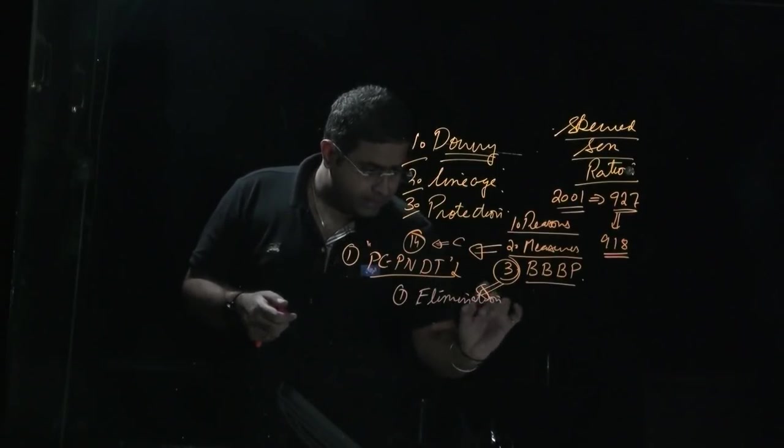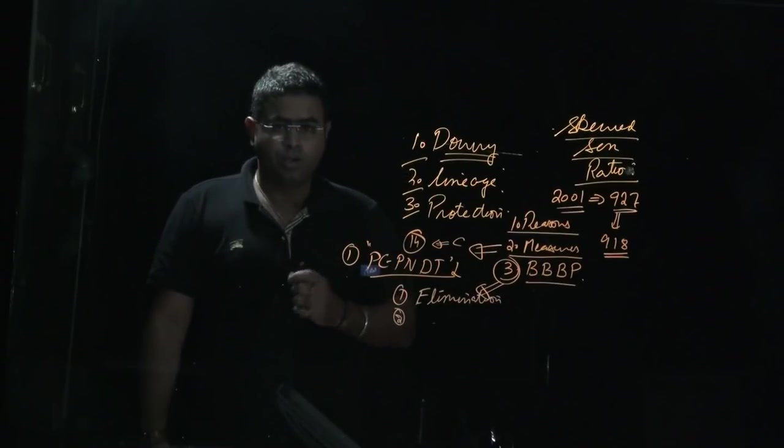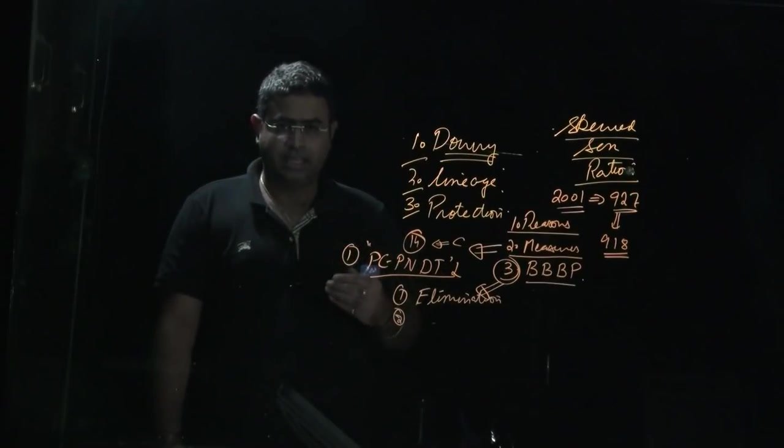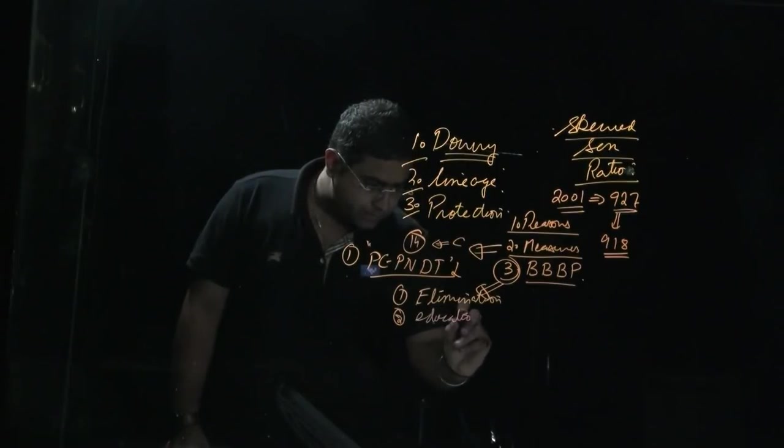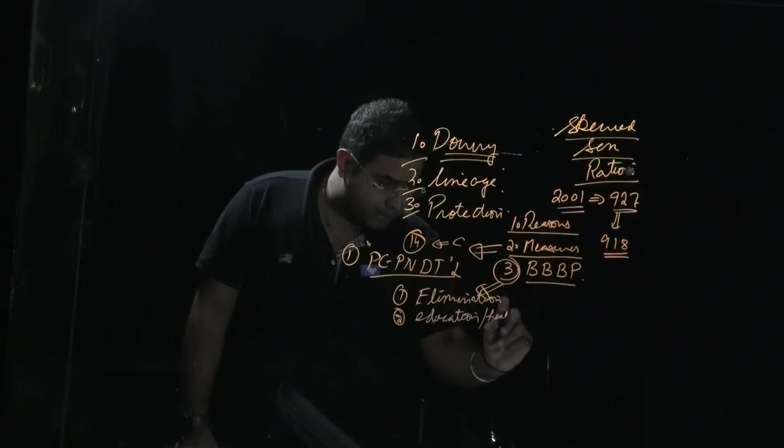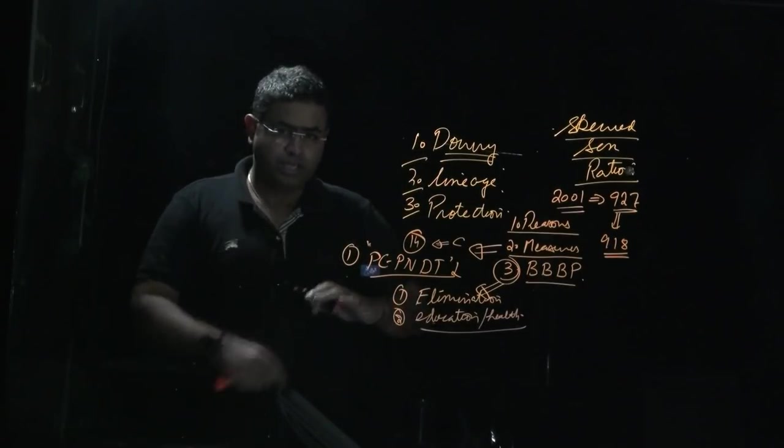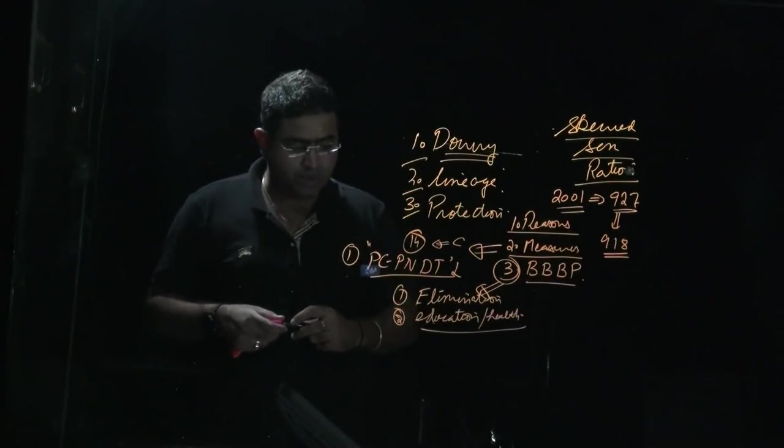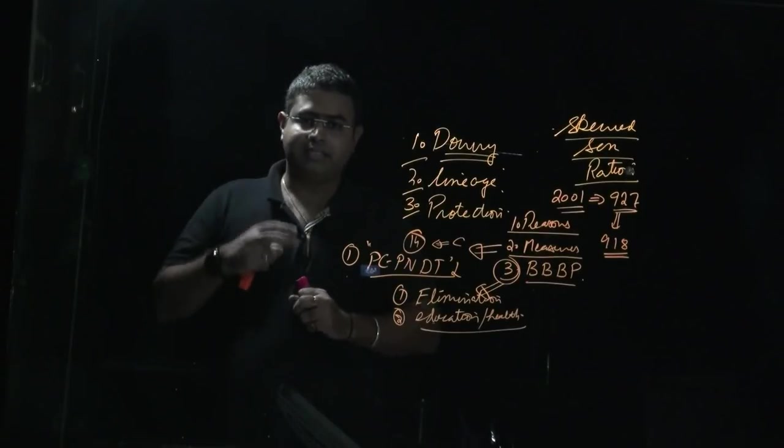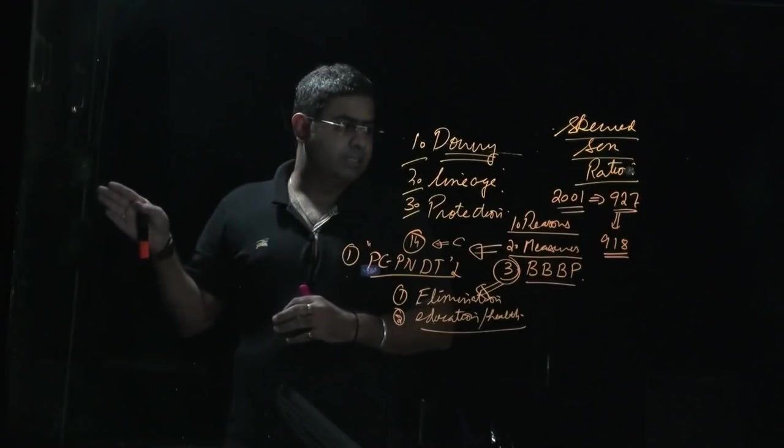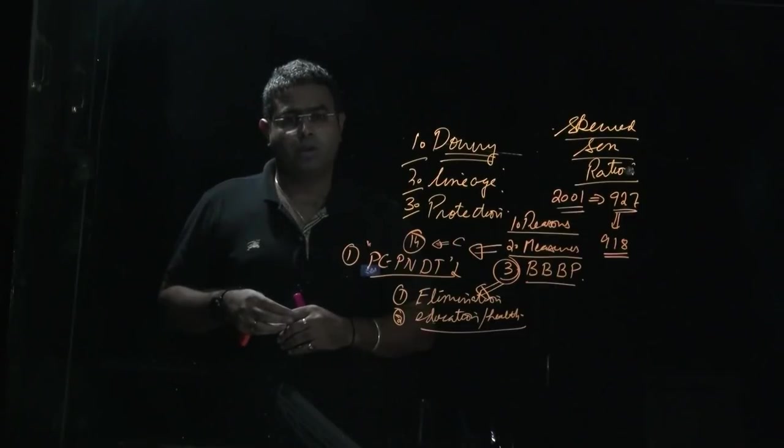Second important thing that is part of Beti Bachao Beti Padhao is you must try to invest in the female child. You must try to give education and plus you also focus on the health aspect of a female child. So these two components - first of all saving the girl child and giving education and social support to the girl child - it is helping government to restrict, to contain the skewed sex ratio. Because if we will have the skewed sex ratio, it is going to create big social troubles.